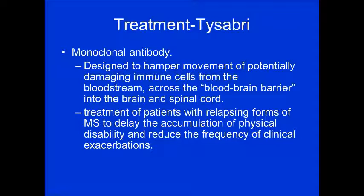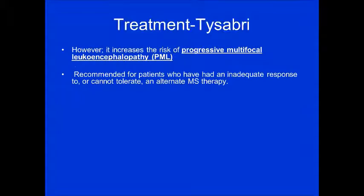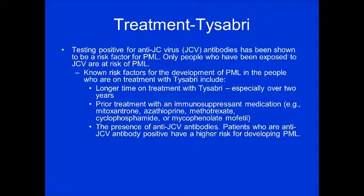Tysabri is a monoclonal antibody designed to decrease movement of potentially damaging immune cells across the blood-brain barrier into the brain and spinal cord. It's used to delay accumulation of physical disability and reduce frequency of exacerbations. However, it increases the risk of PML — progressive multifocal leukoencephalopathy — which is essentially a death sentence. It's recommended only for patients who have had an inadequate response to or cannot tolerate alternative MS therapies. Testing positive for the JC virus is a significant risk factor for PML.